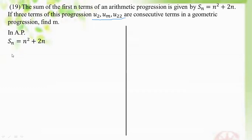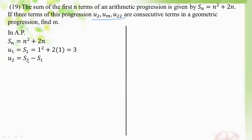You do S2 minus S1, then S3 minus S2. You want S1: one squared plus two into one. Then S2: two squared plus two into two, minus S1.